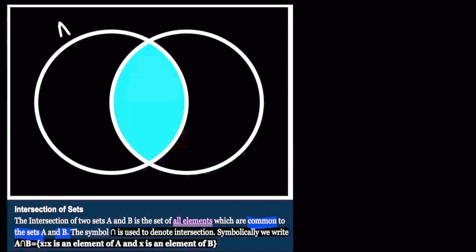This is set A and this is set B. Symbolically, we represent the intersection of sets as A intersection B. In set builder form, we represent it as X such that X is an element of A and X is an element of B.